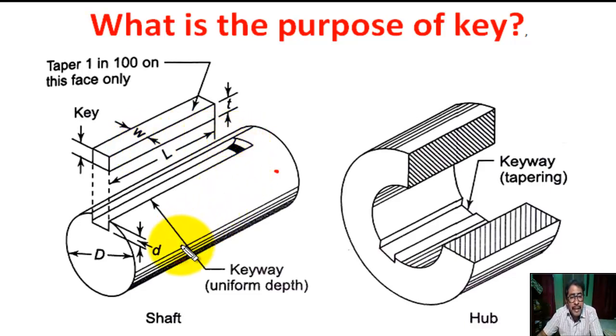This is the shaft. This groove is called keyway. This is uniform depth, no taper. This keyway has thickness t by 2, half of the key thickness. This is called hub or boss or sleeve.